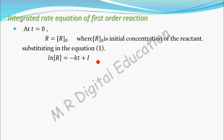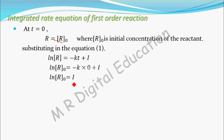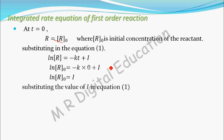Substituting R equal to R naught and t equal to 0 into equation 1: ln R naught equals minus k into 0 plus I. So we get ln R naught equal to I, meaning I equals ln R naught. Now substitute this value of I back into equation 1, and you get: ln R equals minus kt plus ln R naught.